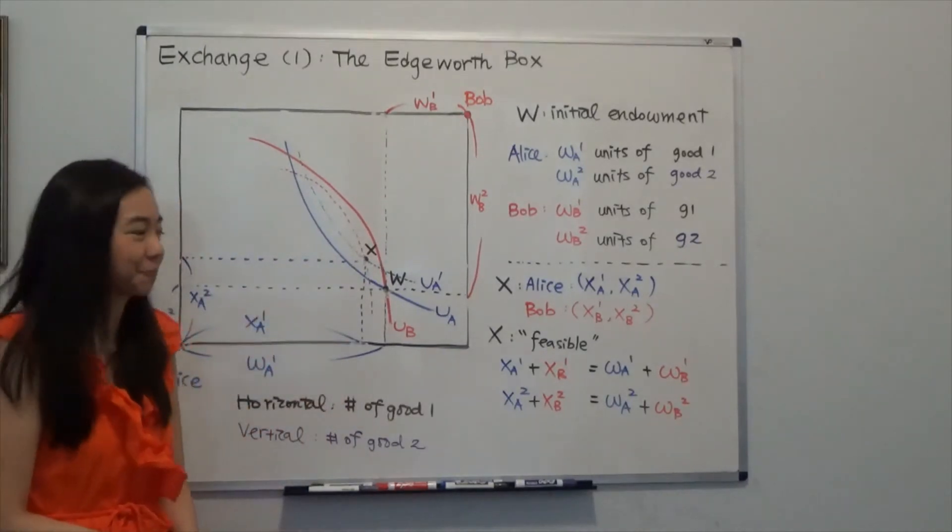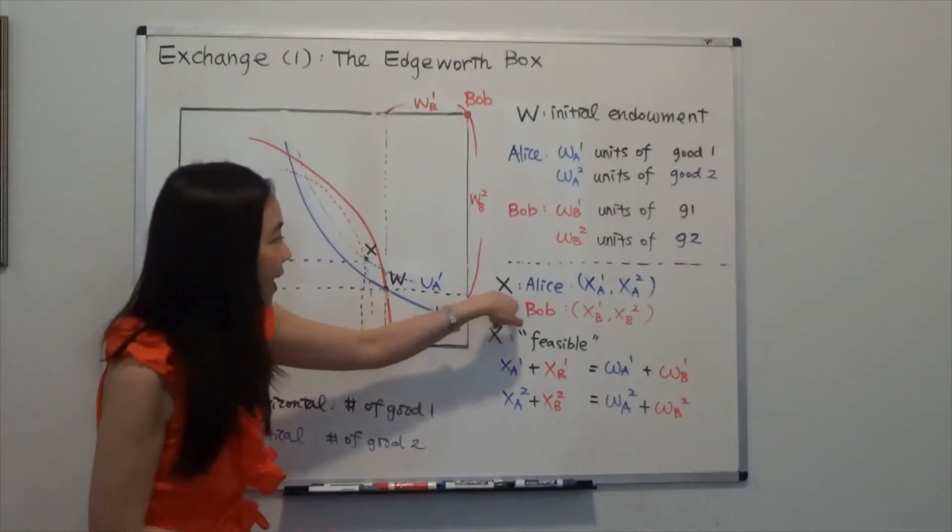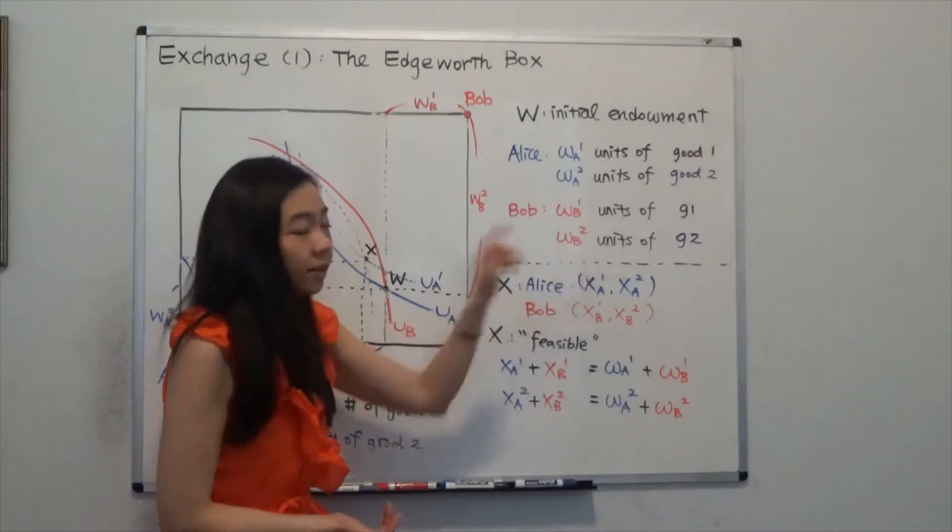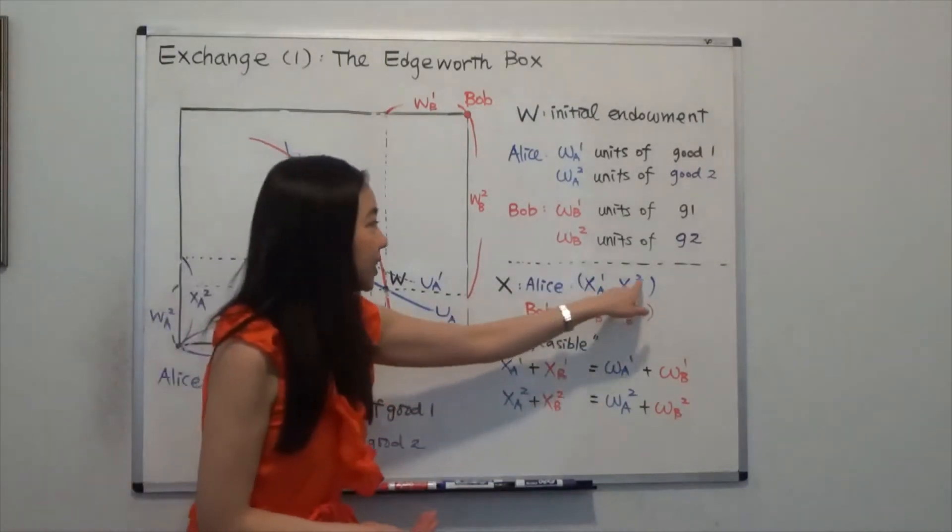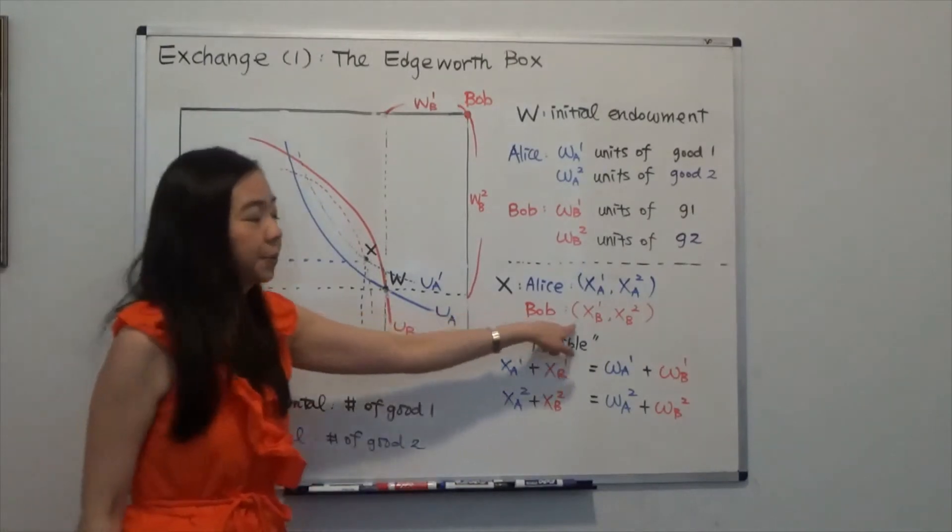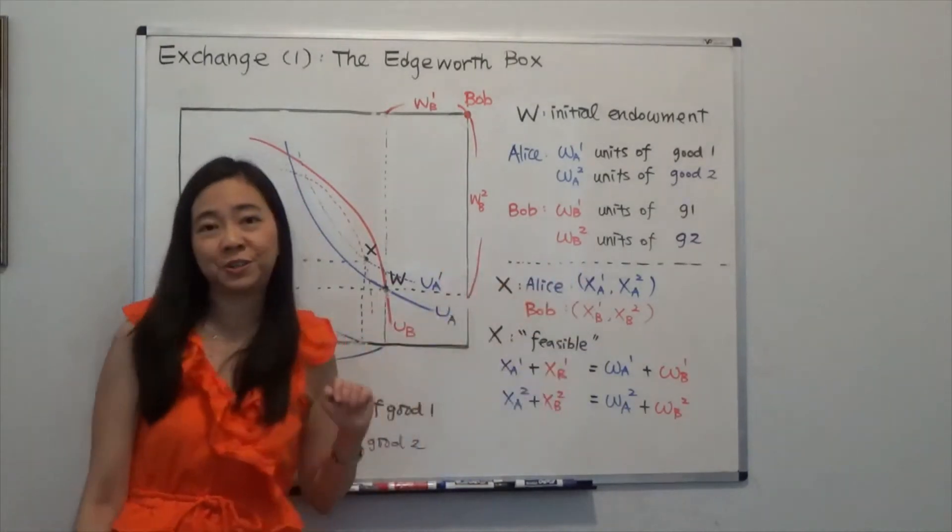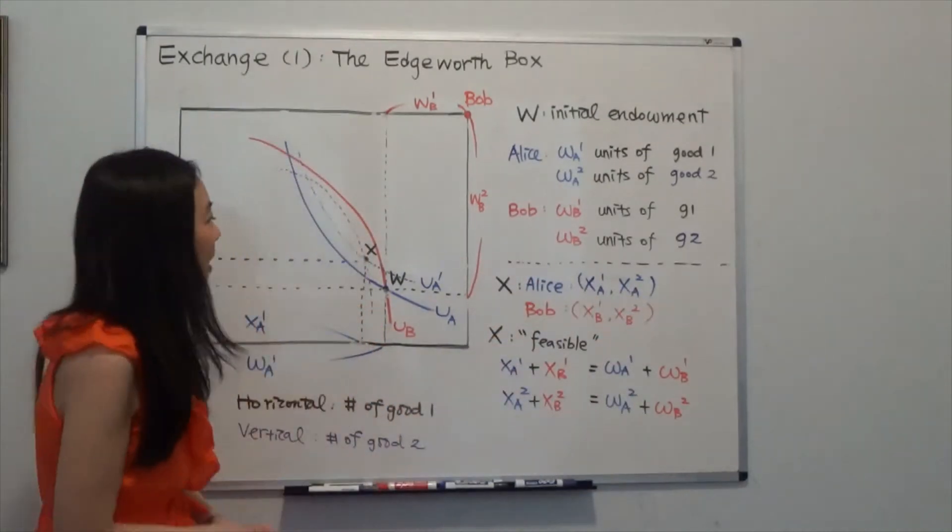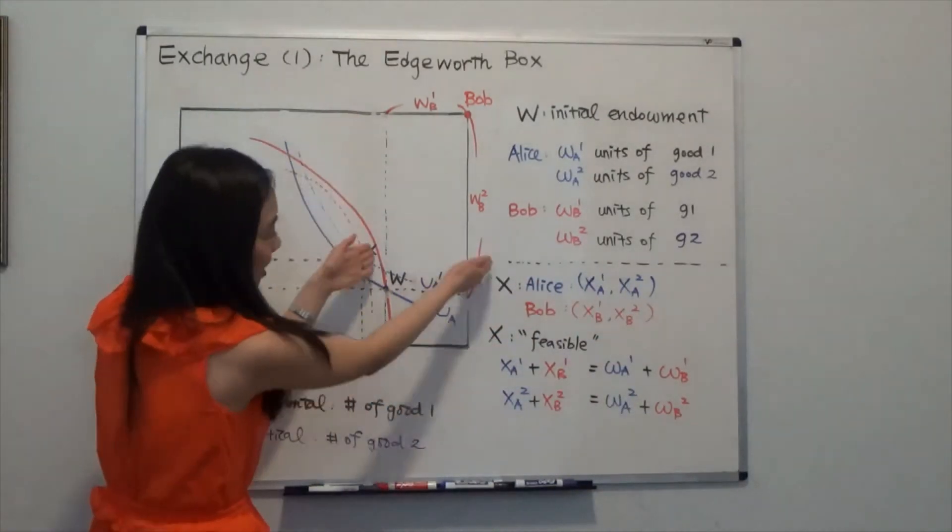So in point X, Alice is consuming XA1 units of Good 1 and XA2 units of Good 2. So this is XA1, this is XA2. And Bob is consuming XB1 units of Good 1 and XB2 units of Good 2. And remember, for Bob, you have to look at the other way around.